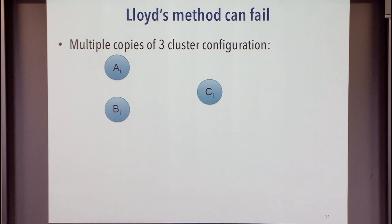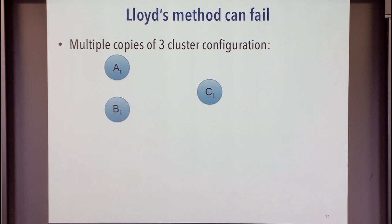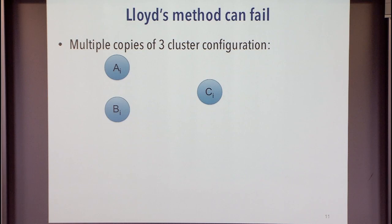Lloyd's heuristic will fail in the sense it will not recover the true cluster. It will give a solution value that's 1 plus epsilon of optimum, but won't recover the original cluster — our focus is on exact recovery. The bad instances look like this: multiple copies of a configuration with three clusters A, B, and C, where A and B are somewhat close to each other and C is far away, with these groups all far from each other. The key to showing these iterative heuristics fail is to show the initial configuration is bad, and once it's bad in a certain way, there's no hope.